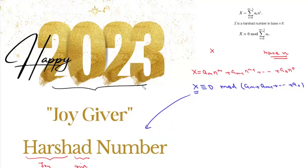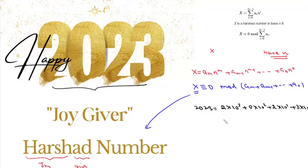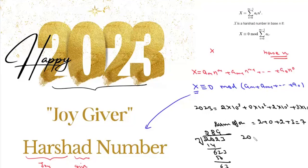Now 2023 is expressed in decimal base. If you write 2023, it will be 2 × 10^3 + 0 × 10^2 + 2 × 10^1 + 3 × 10^0. Now if we look at the sum of digits: 2 + 0 + 2 + 3 = 7. And 2023 ≡ 0 modulo 7, therefore 2023 is a Harshad number.